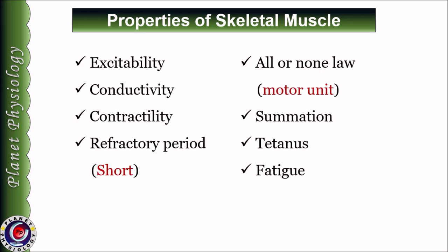Let us quickly revise the important points. Skeletal muscle shows the properties of excitability, conductivity, contractility, refractory period, all or none law, summation, tetanus and fatigue. The refractory period in skeletal muscle is very low, and because of that it can show summation, tetanus as well as fatigue. All or none law is obeyed by individual motor units, and because of this, gradations in response are possible in skeletal muscle — which is also necessary to save energy expenditure on muscle contraction.